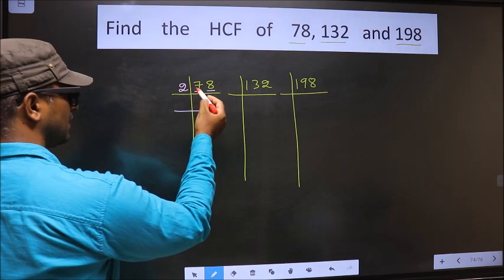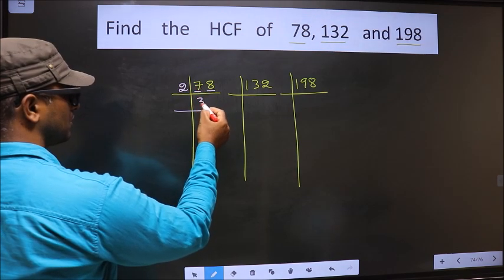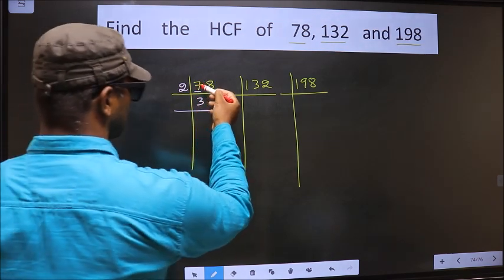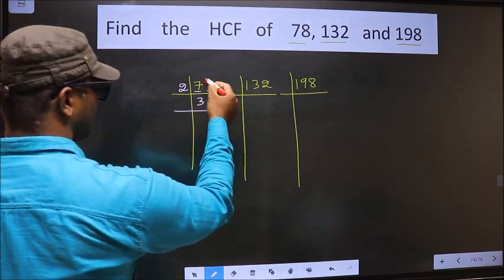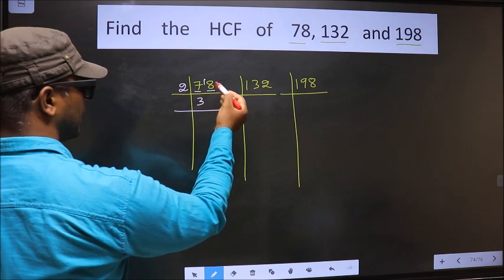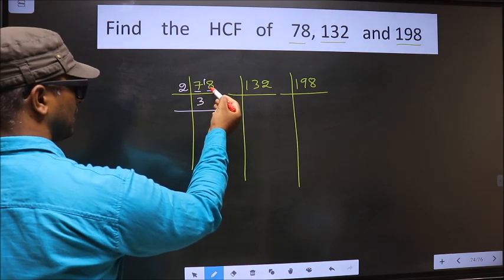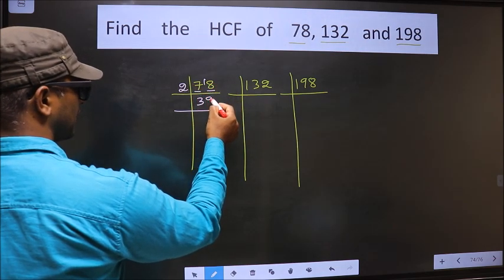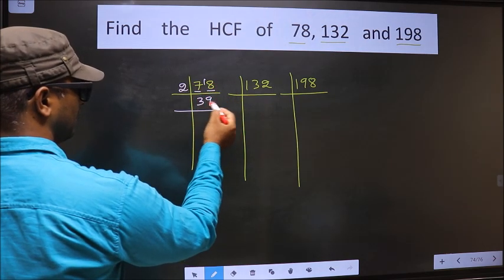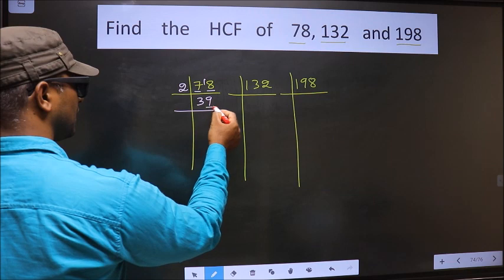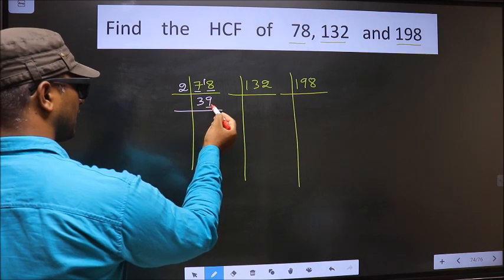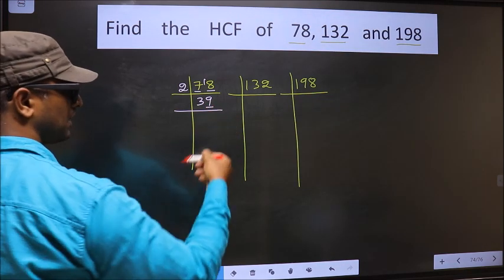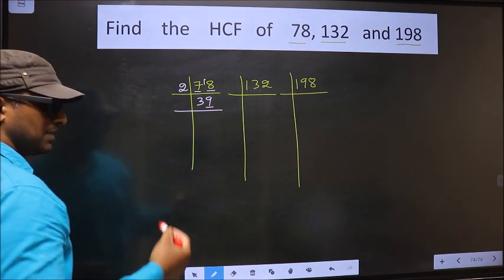A number close to 7 in the 2 table is 2×3=6. 7 minus 6 is 1, carried forward making it 18. When do we get 18 in the 2 table? 2 nines, 18. Now here the last digit is 9, not even, so this number is not divisible by 2.